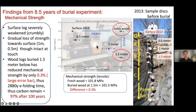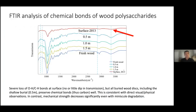Under a microscope, the fresh wood collected on site during excavation and the buried-and-excavated wood were both intact, while the surface-rotted one looks severely degraded. The key data is mechanical strength. Focusing on the surface-rotted sample versus the disk recovered at 1.5 meters depth, the mechanical strength is basically the same — just a 0.3% difference. If you put that change into a formula, that gives you 97% remaining after 100 years. A second analysis using FTIR looked at chemical bonds of polysaccharides: the surface sample lost the signature of OH and CH bonds, but all buried disks — even the half-meter one — still had those chemical bond features intact.